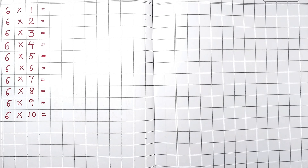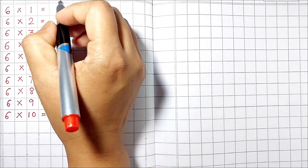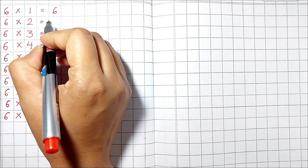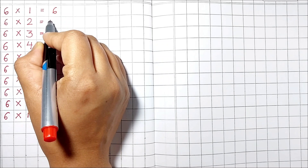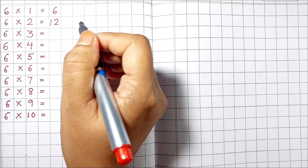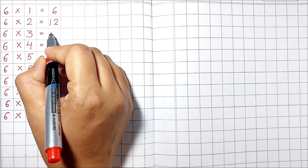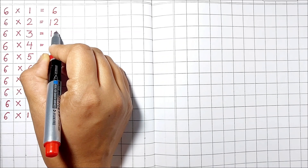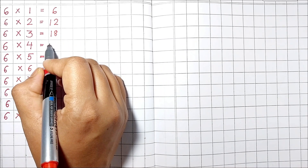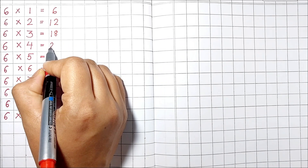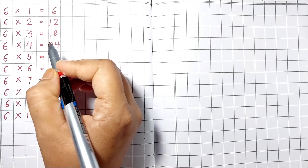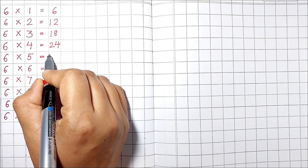Table of 6. 6 1's are 6. 6 2's are 12. 6 3's are 18. 6 4's are 24. 6 5's are 30.